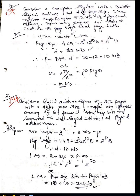Consider a computer system with a 32-bit logical address space and 4KB page size. The system supports up to 512 MB of physical memory. How many entries are there in each of the single-level page tables? Page size is given and we need to find the page number from the logical address space.